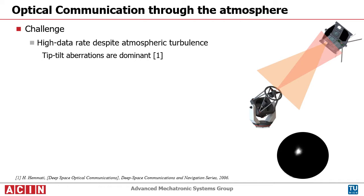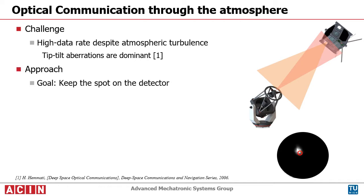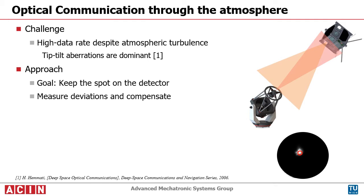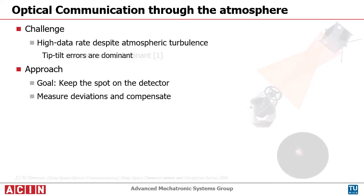The recorded video shows this effect. To ensure high data rate communication, the received laser spot has to be kept within the receiver area, indicated by the red circle. The approach of tip-tilt compensation is to measure the movement of the laser spot and counteract this movement.